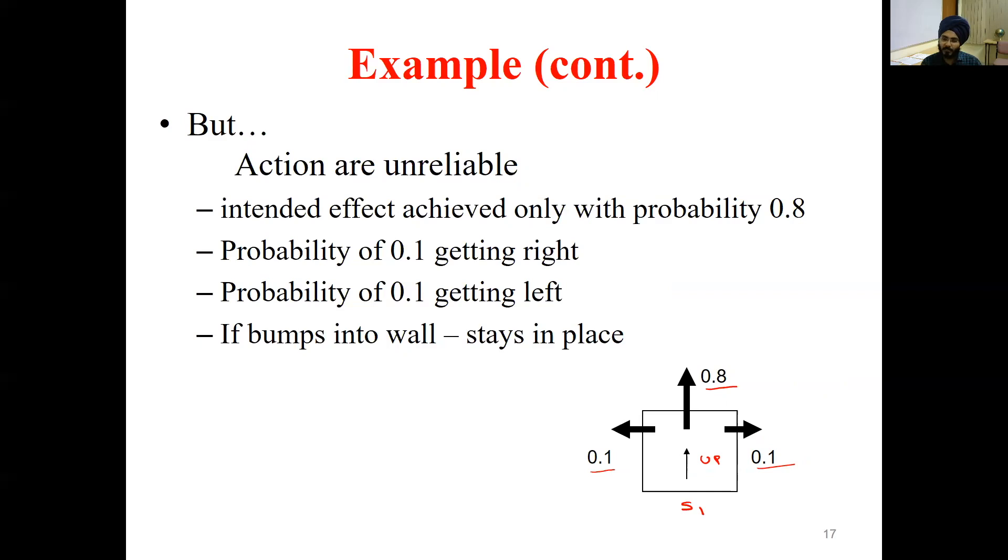So taking these actions will be landing to different states. If there was a wall on one of the sides, then I would be simply bumping with the wall and reaching back to where we started. Let's say this left side, there was a wall. That means I cannot cross over the wall and reach to the other. So in this case, what will happen is if you bump with the wall, you will come back to the same state.